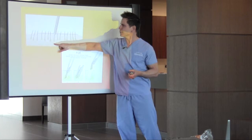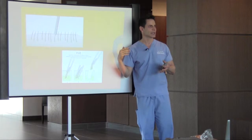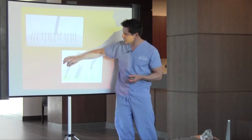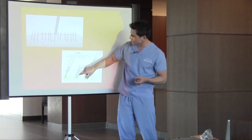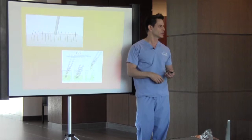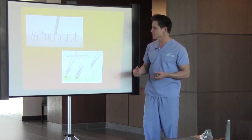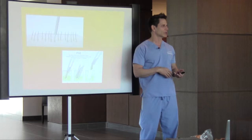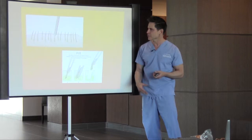The tricky thing about FUE that makes it less ideal than strip grafting is that when you use the punch, you have to get the whole hair follicle — the bulb and the sebaceous gland with the stem cells. If you transect it, that hair won't survive. The transection rate with FUE can be as high as 30%, so you may only get 70% survival, whereas strip grafting gives about a 90% follicle survival rate.